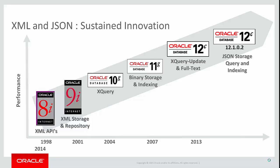Oracle Database 10g Release 2 maintained our commitment to the XML standards process. We became the first major vendor to support the W3C XQuery recommendation, ensuring the database could understand and optimize XQuery just as effectively as SQL. Our early support focused on structured XML documents that conformed to an XML schema. As XML use became more widespread, we began to see greater use of semi-structured and unstructured XML, and our original object-relational storage model could not keep pace with emerging use cases.